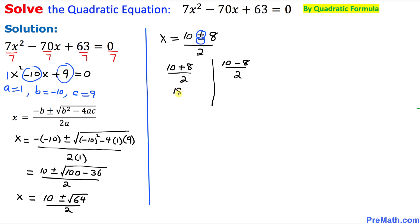This is going to become 18 divided by 2, so that means x equals 9 is one of our solutions. And here 10 take away 8 is going to be 2 divided by 2. That means x equals 1 is another solution.